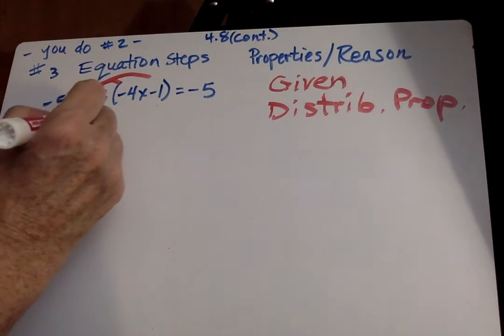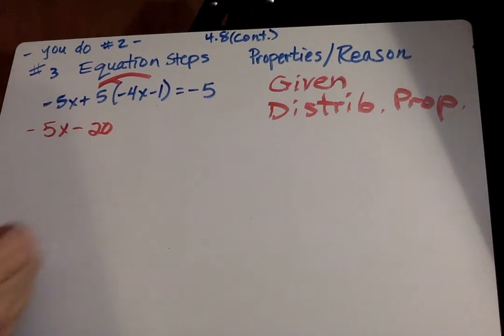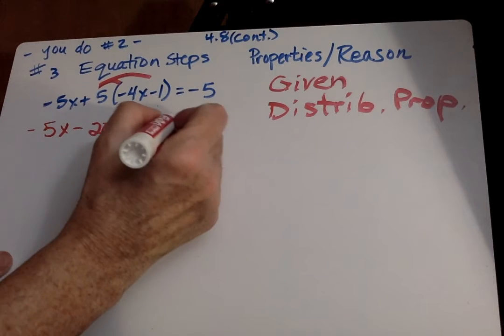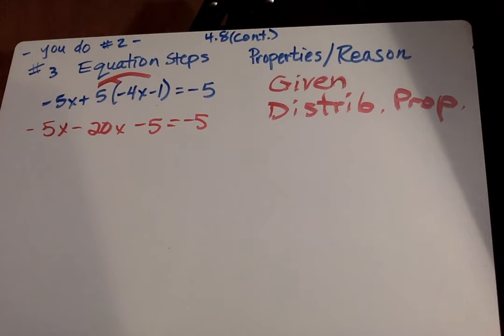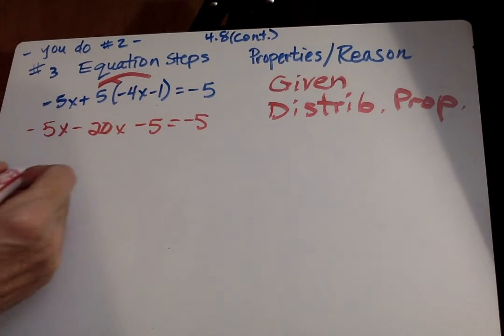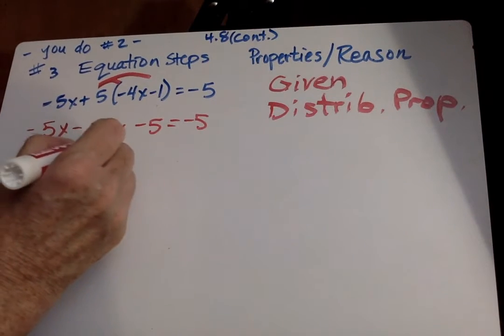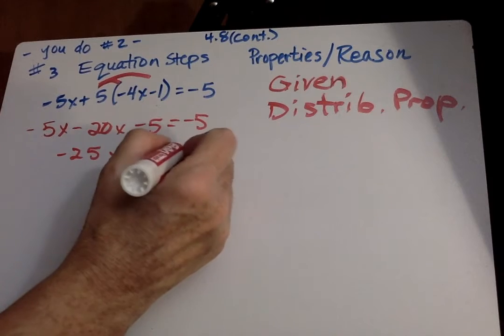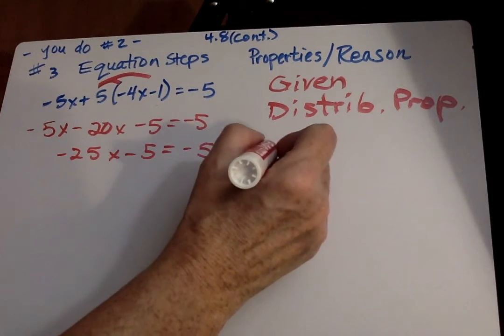So negative 5x, 5 times negative 4, negative 20x minus 5 equals negative 5. Then we're going to combine like terms. So when we combine like terms, negative 25x minus 5 equals negative 5. And that again, when you simplify, it's substitution.